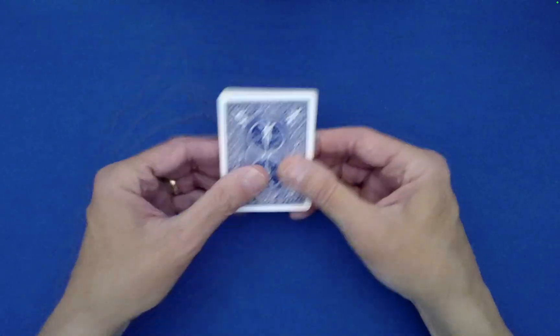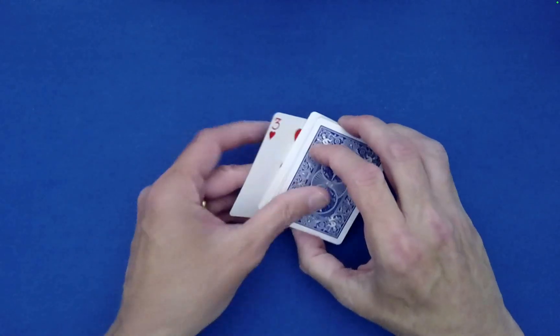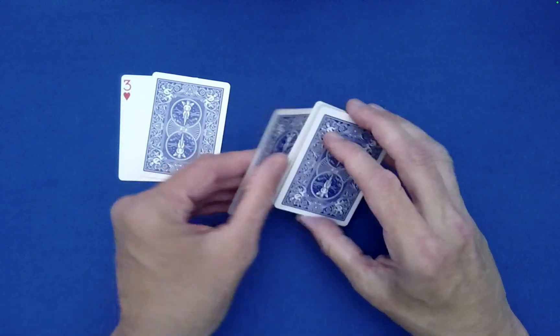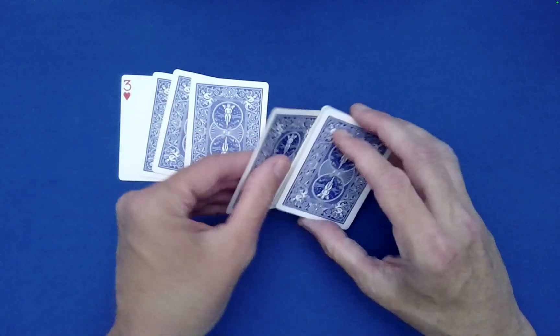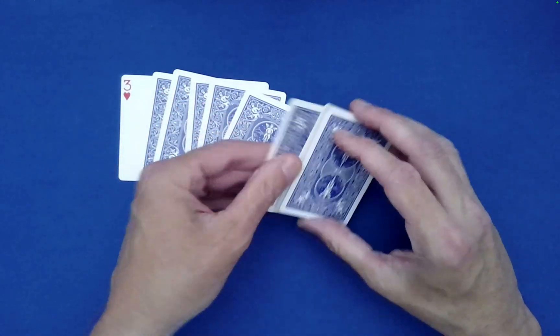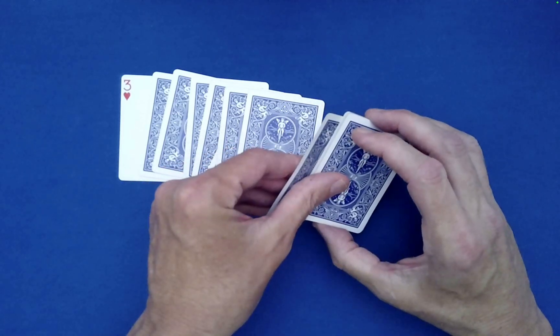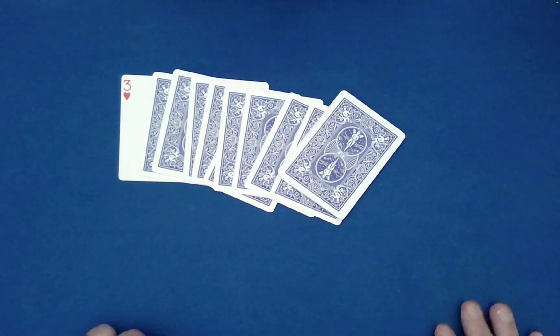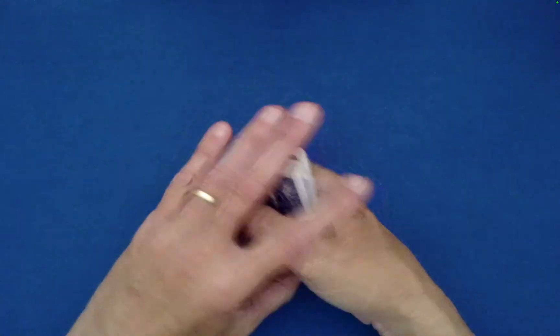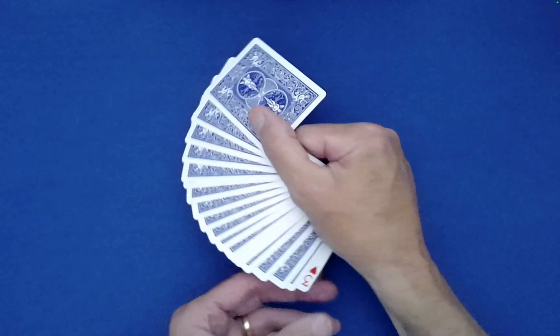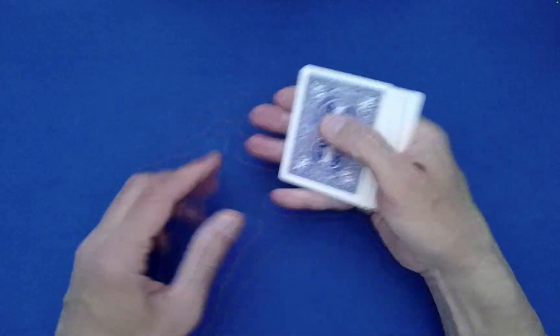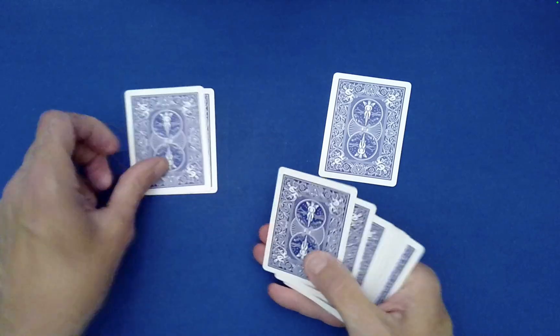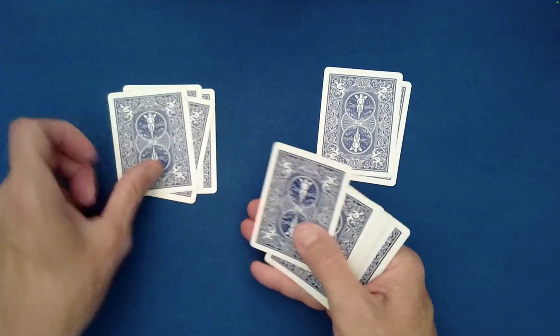So if you want to include this you can but just realize that the next three little steps could be omitted. What I did was I began to do a Klondike shuffle. This is where you take the top and bottom off as one. Now at any point you can stop doing this.